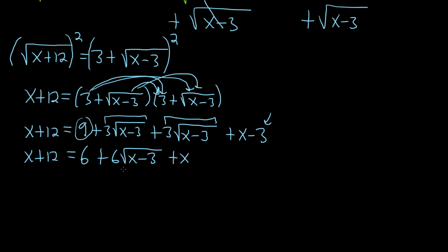We still have a square root, so we need to isolate it to square both sides again. Let's subtract 6 and subtract x from both sides. 12 minus 6 is 6, and these cancel. Oh, this is nice. This is not so bad. We could have had more x's, but this is a nice one.